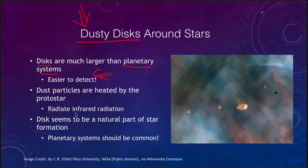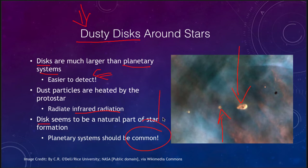The dust particles are radiating infrared radiation. When we look, we see these little dusty areas which are likely the beginnings of planetary systems that are forming. When we look at star-forming regions, the disk seems to be a natural part of star formation, meaning that there should be lots of planetary systems out there.